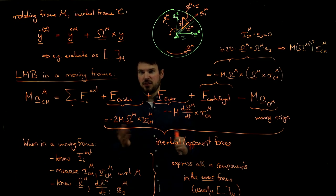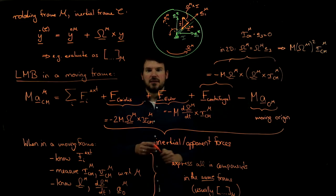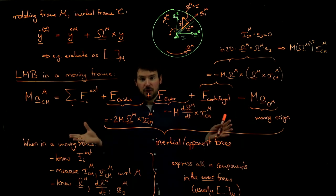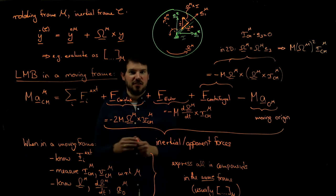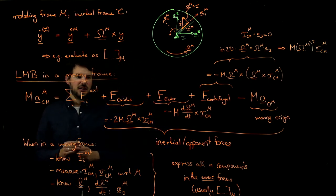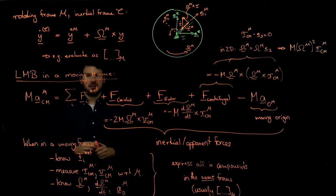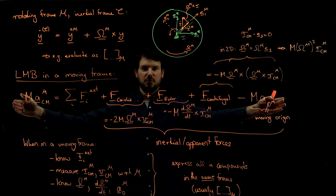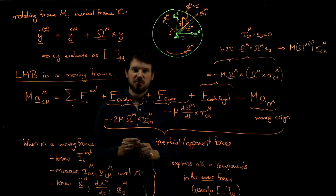The most important point for this week: when you're in a moving frame — meaning the origin is accelerating, the basis is rotating, or both — things can look different than they seem. If you're sitting on the frame you observe different physics than an inertial observer sitting next to it. This is the non-inertial moving frame scenario, and this is our LMB with inertial forces that we have to consider. That's it for now. Thanks and ciao!